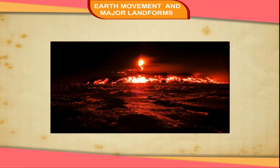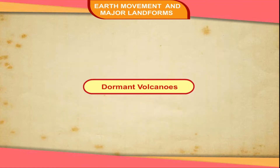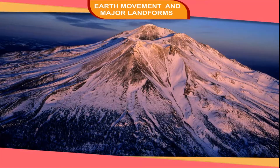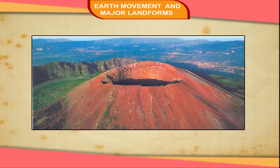Example: Mount Etna in Italy. Dormant Volcanoes. These volcanoes have not erupted since a long time. They are also called sleeping volcanoes. They may erupt later, though they have not erupted since a long time. When they erupt, they can be very destructive.